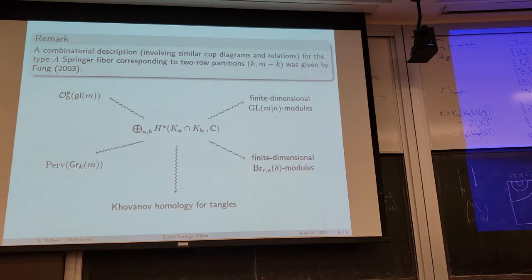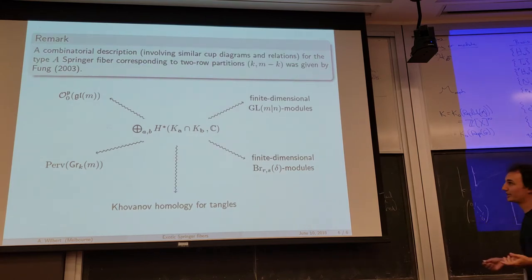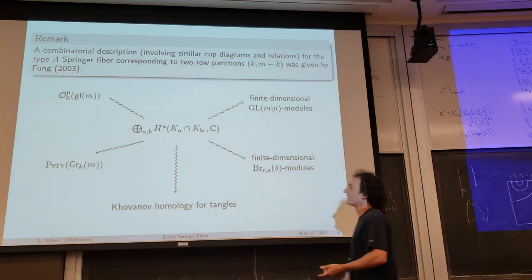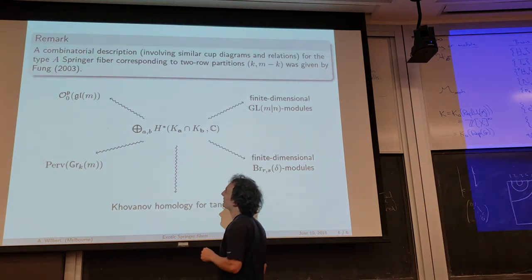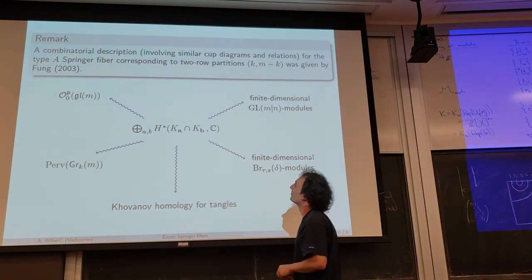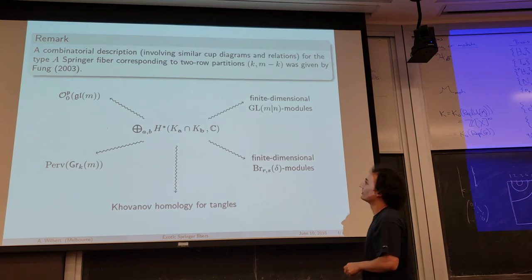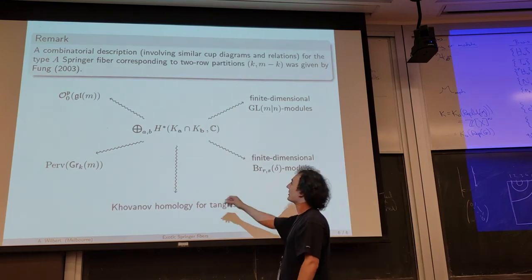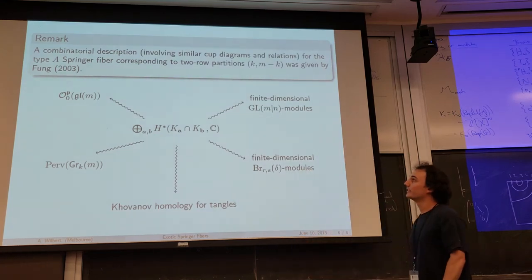This is all known in type A, and what I would like to see is: how can I replace all these things in the exotic case? Because basically we can construct this algebra now, but it's a completely open problem to relate it to all these different things.